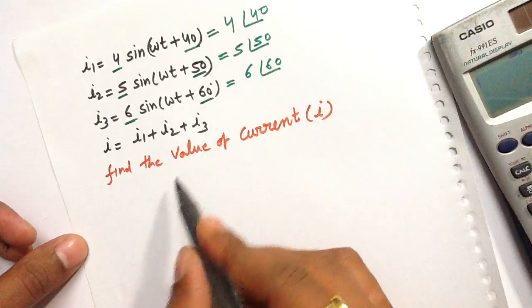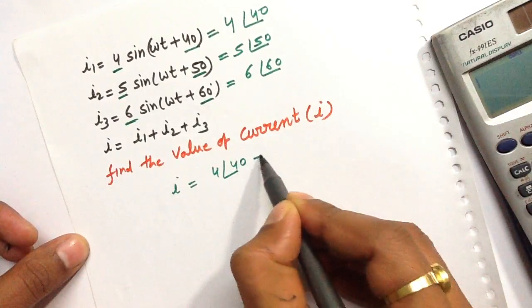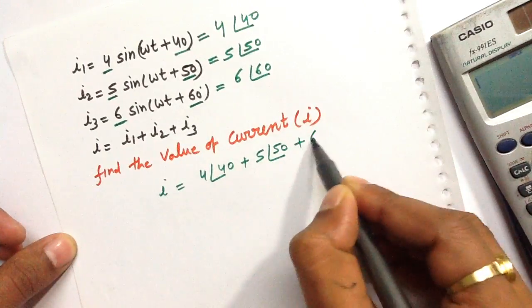We need to add all three values: i = 4∠40 + 5∠50 + 6∠60.